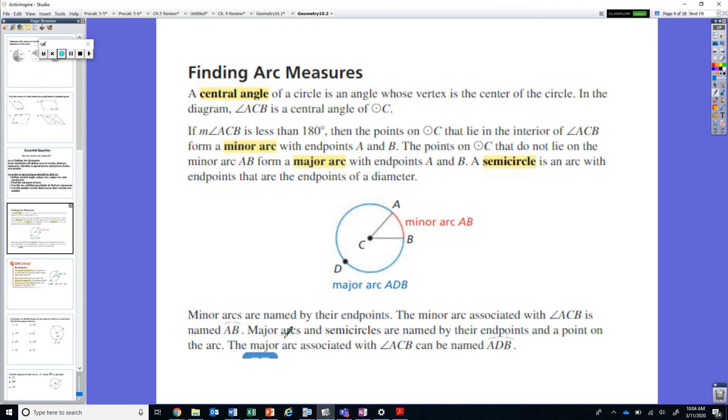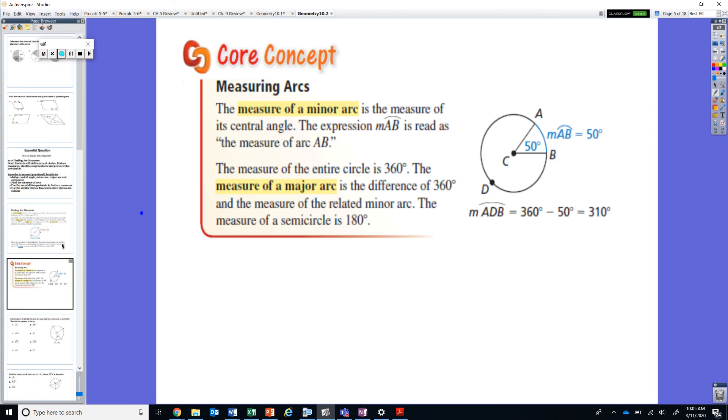Similarly for our major arcs and half circles or semicircles, you will see them named with the three points and the arc above it. Let's talk about finding the measures. What is true about the measure of minor arcs is that they are going to be equal to the measure of the central angle that is created. So what we are saying here is that the measure of angle ACB is at 50 degrees but so is the measure of arc AB also measures at 50 degrees. So if that's the case, arc ADB the major arc would then be 360 degrees, the entire value of the circle, minus 50 degrees.